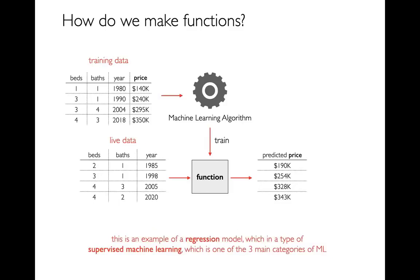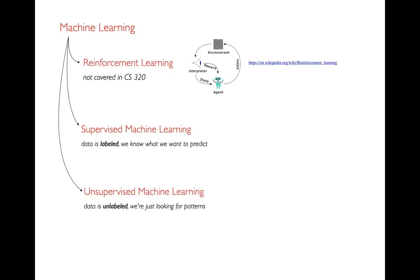The example I've given is a regression model, which is more broadly a type of supervised machine learning — one of the three main categories. The three main areas of machine learning are: reinforcement learning, where you make a series of decisions trying to optimize some reward (like a robot picking up coins); supervised machine learning; and unsupervised machine learning. We won't be doing reinforcement learning in this class. We'll also note that some people say there's a fourth category called semi-supervised, but we won't cover that.